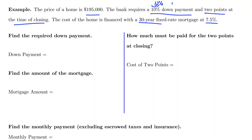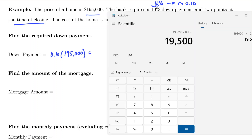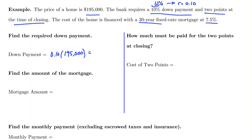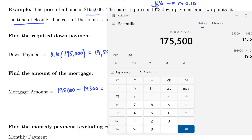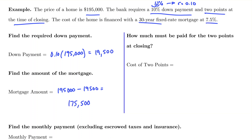To calculate the down payment, I'll convert the percent to a decimal — 10% becomes 0.10. The down payment is 10% of $195,000, so I take the decimal and multiply by the number: the down payment is $19,500. The amount of the mortgage is the advertised selling price minus the down payment, so the mortgage will be $175,500.